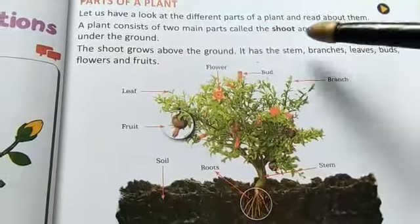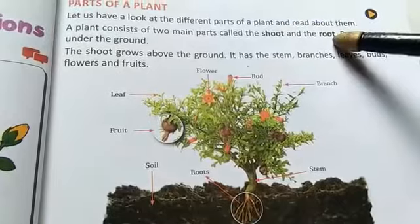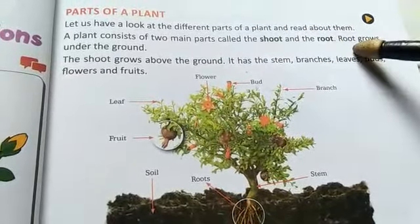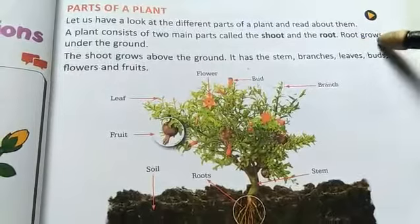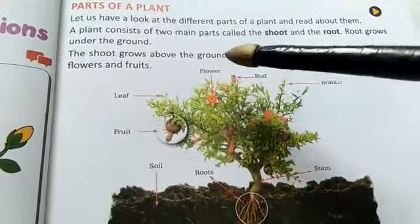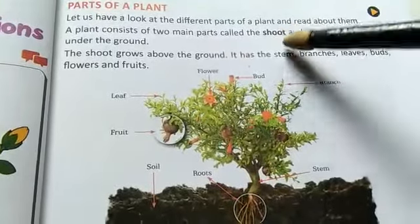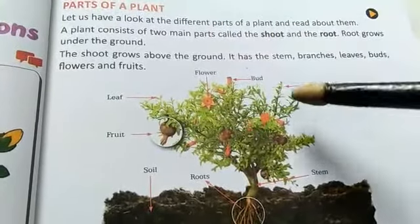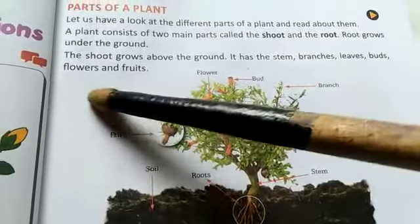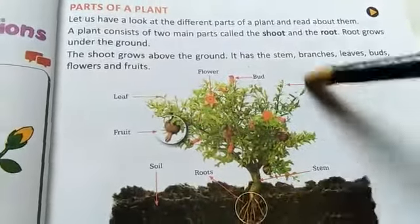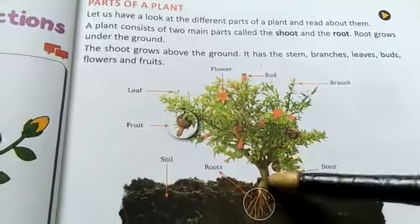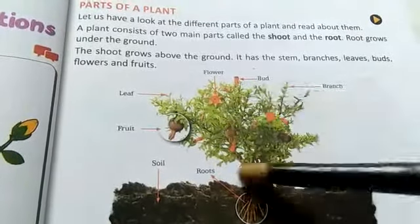Now we will discuss the parts of a plant. There are mainly two parts: one is the shoot and the other is the root. The root grows under the ground, and the shoot grows above the ground.